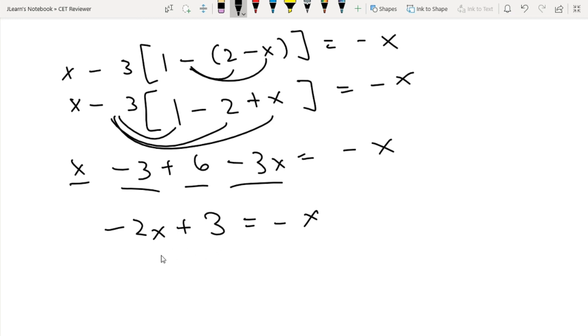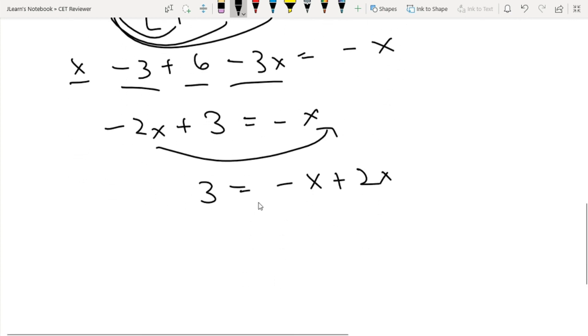And again, we isolate the terms. We can move the negative 2X to the right side. So 3 is equal to negative X plus 2X. The signs will flip. And it becomes X equals 3.